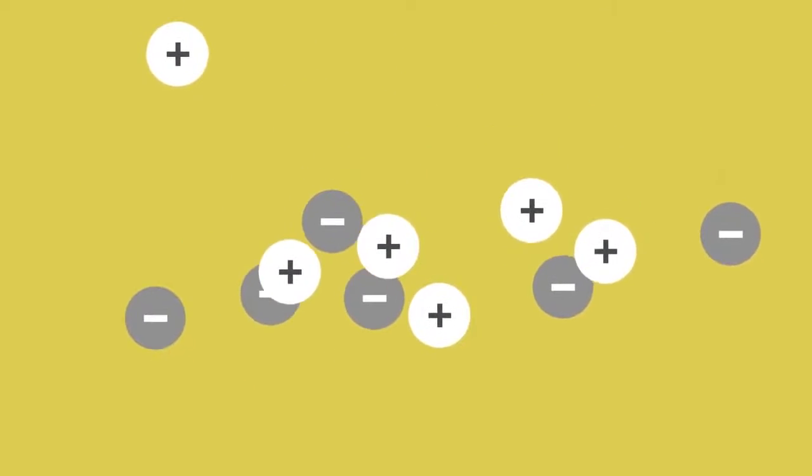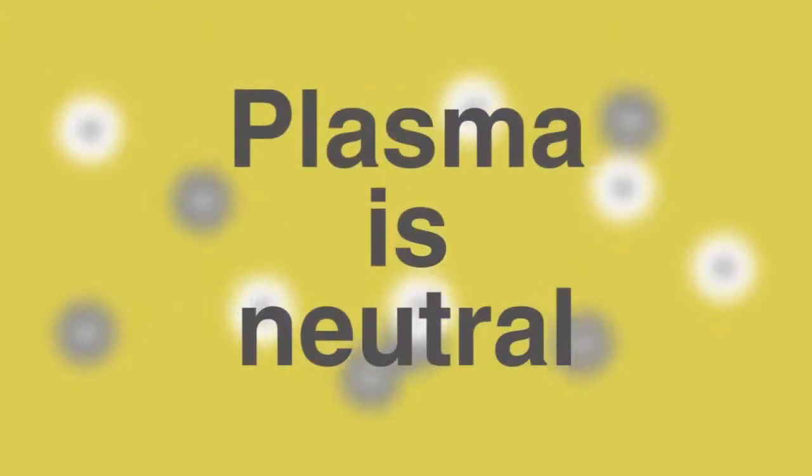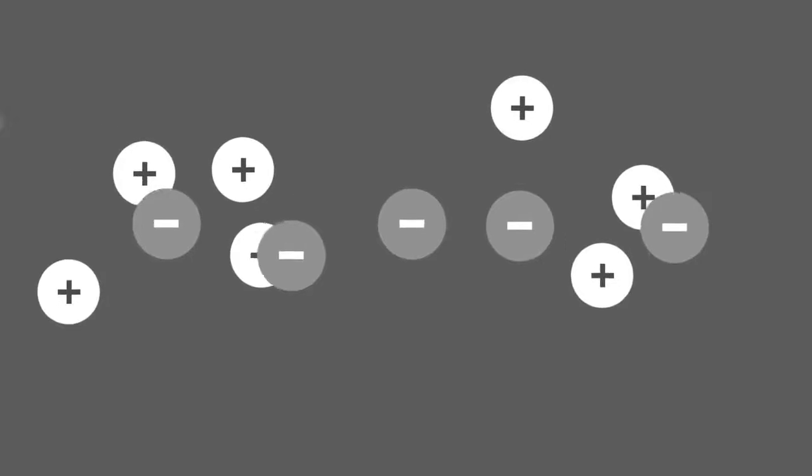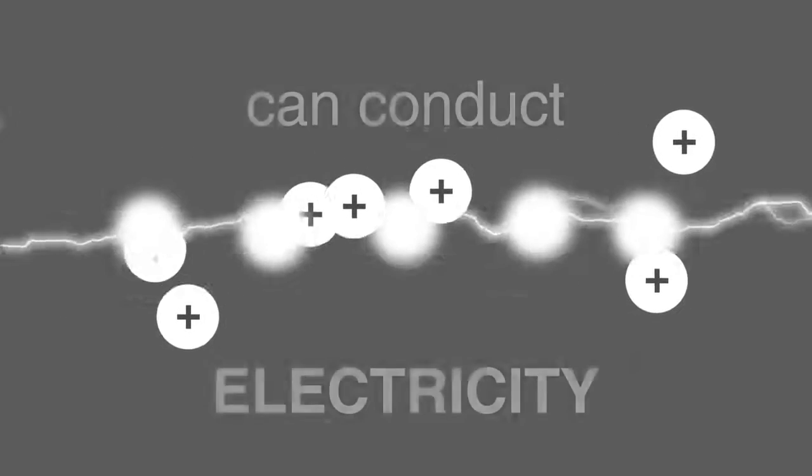Although there are both negative and positive particles, plasma is neutral overall as there are equal amounts of oppositely charged particles. Since free electrons are present, substances in plasma form can conduct electricity.